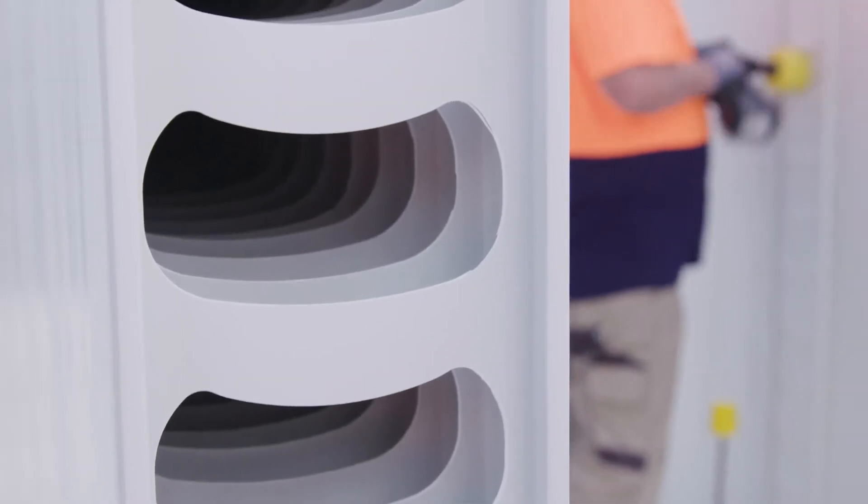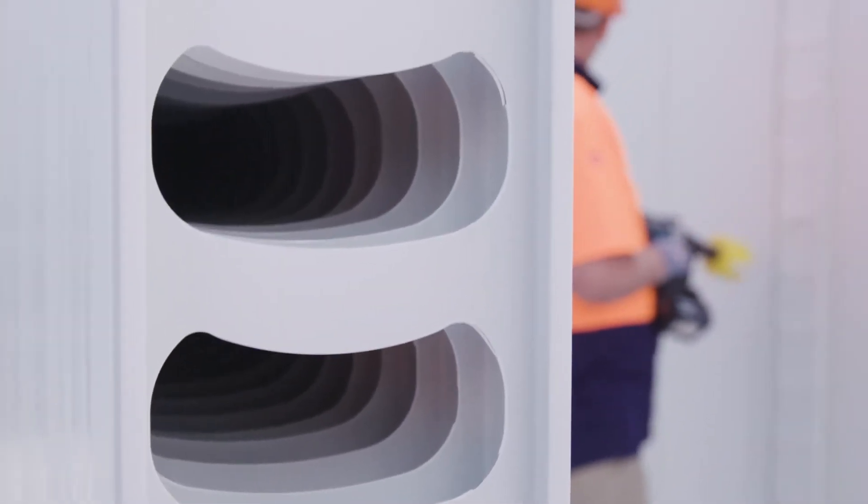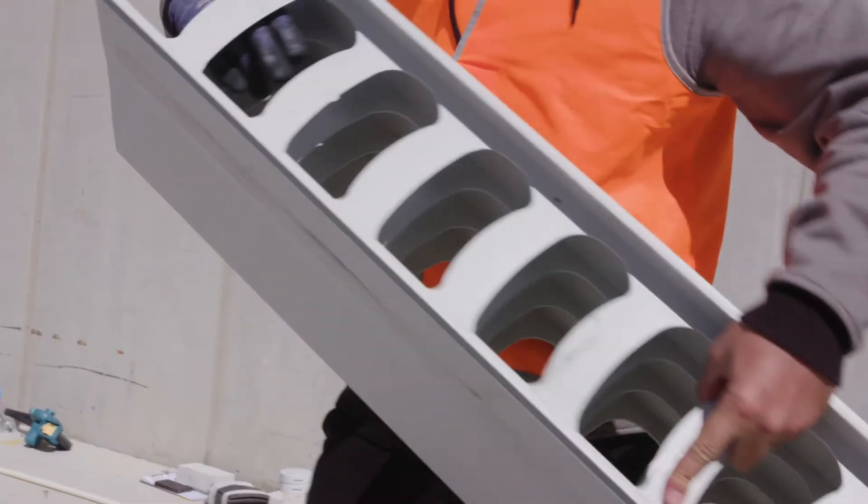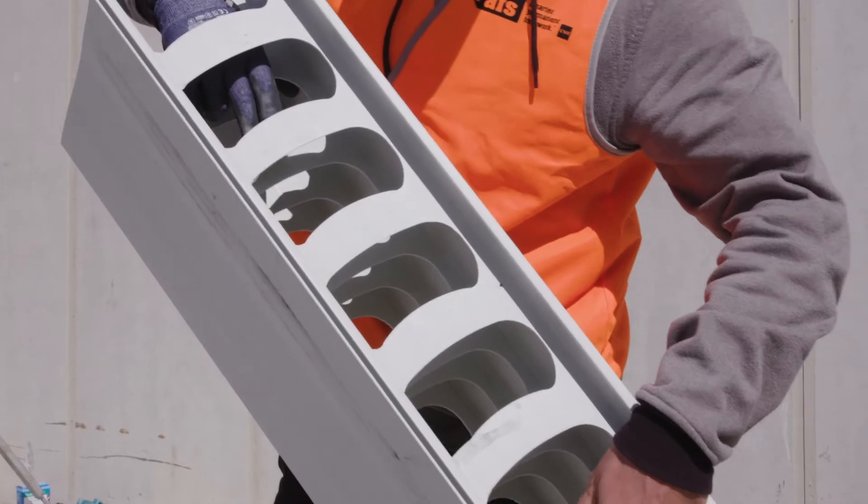When installing the ready wall panels, ensure all web holes are aligned horizontally. Damage to webs inside can result in bulges when wall is core filled with concrete.